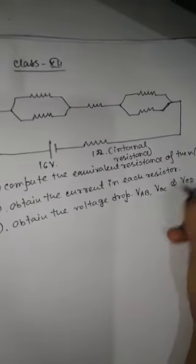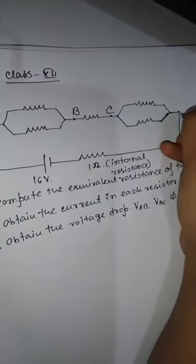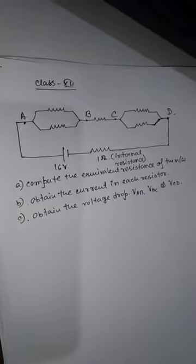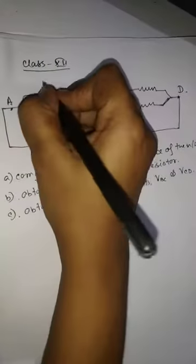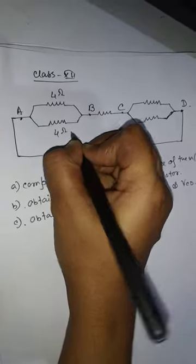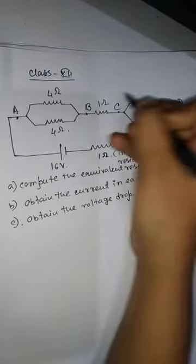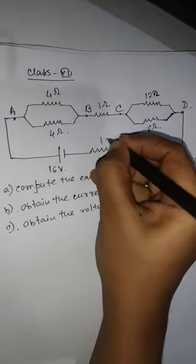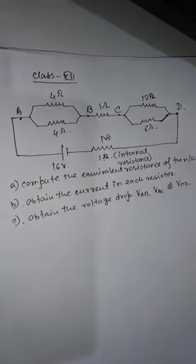I am giving the points as A, B, C, and D. So the voltage drops are VAB, VBC, and VCD. The resistor values are: this is 4 ohm, this is 4 ohm, this is 1 ohm, 12 ohm, 6 ohm, and 1 ohm is the internal resistance.